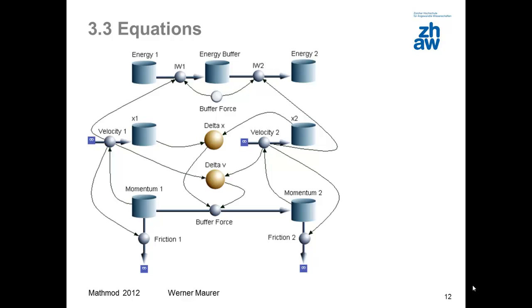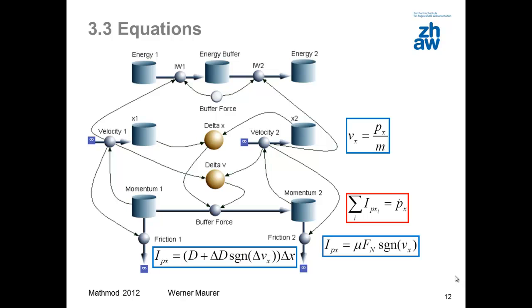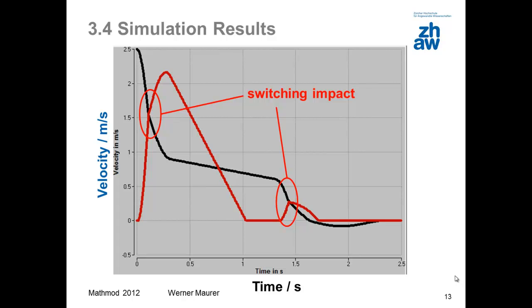Now for the equations. The balance of momentum is formulated graphically using reservoirs and pipes. The law of capacitance is easy to formulate. The momentum flow passing through the buffers depends on the displacement as well as the velocity of the two wagons. The sliding friction only changes according to the sign of the velocity. The energy flow is velocity times momentum flow, just like in hydraulics. This diagram shows the time evolution of velocity for the two wagons. The advancing wagon is shown in black,